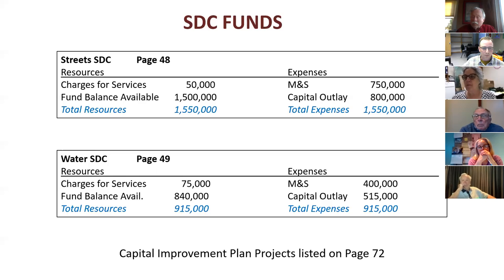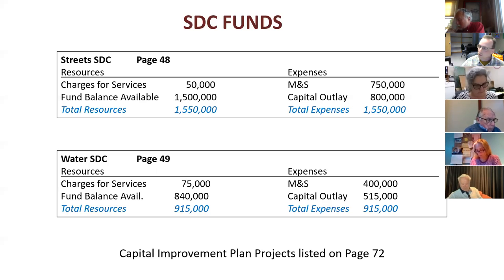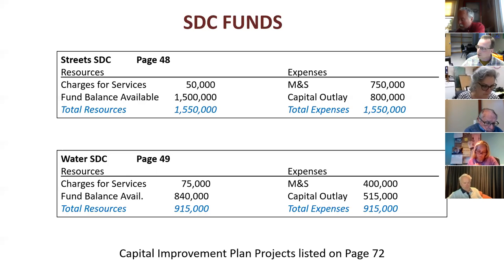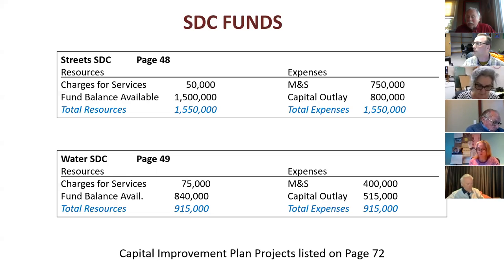On the bottom of the page I put the page number for the capital improvement list — page 72 — and on page 73 there is a summary list of the five-year capital improvement plan. You can see all major street projects listed. On the far right I put their funding source. You'll see the Safe Routes to School Columbia Boulevard project says 'Streets SDC.' The North Fernonia project is 50% STP state grant funds and 50% SDC. You can peruse that project list as we go through all the SDC funds.